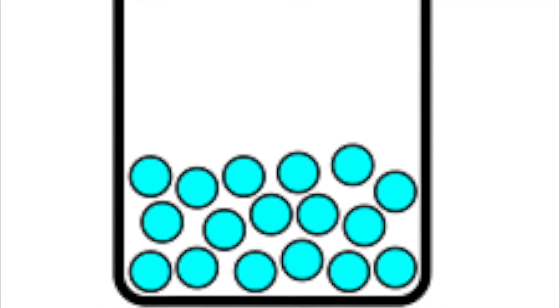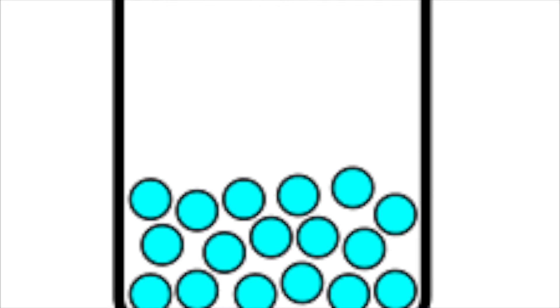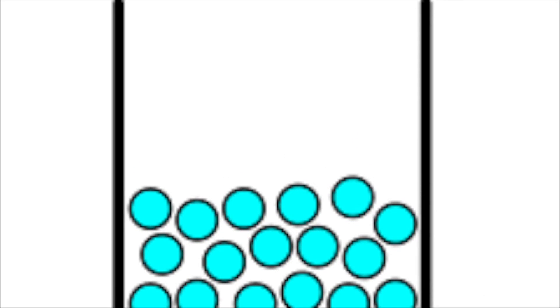In a liquid, they vibrate more violently and they begin to break bonds and slip and slide over each other. They have a fixed volume but they can flow and they can change shape.